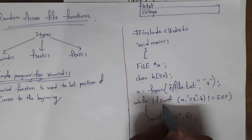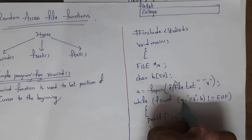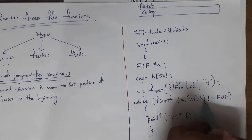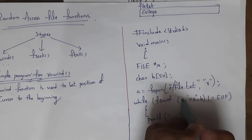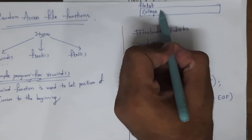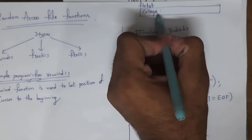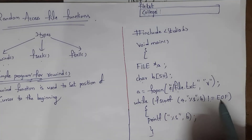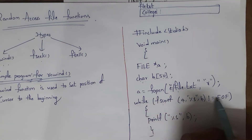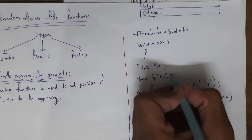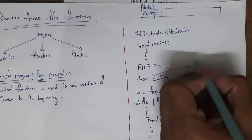To transfer file data to variable B, I use fscanf. By writing fscanf(a, "%s", B), whatever data is present in my file is transferred to string B. I want to transfer text until the last character, so I used a while loop with the condition not equal to EOF, where EOF stands for end of file. After this, my string variable B contains the text 'college'.